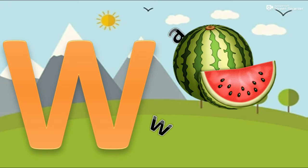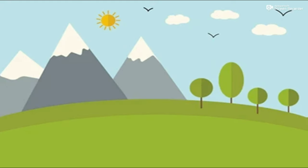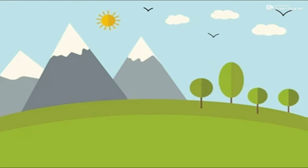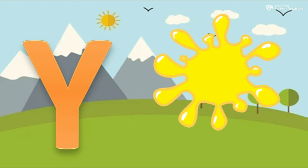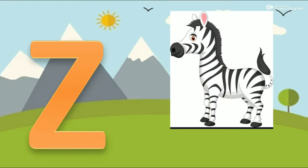W for watermelon. X for fox. Y for yellow. Z for zebra.